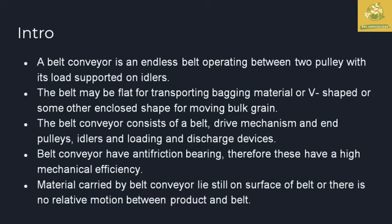Belt conveyors are an endless belt operating system that can be operated with the help of two pulleys over load supporters on the idlers present in the belt conveyor. The belt is flat or V-shaped depending on circumstances, and is used for moving bulk grain materials from one point to another. The belt conveyor includes a drive mechanism, end-to-end pulleys, idlers, a loading system, and discharge devices.